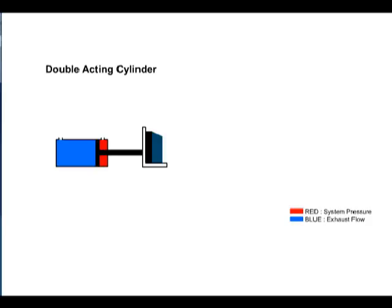Extension is slower than retraction because more fluid is required to fill the piston side of the cylinder. However, more force can be generated on extension because of greater effective area. On retraction, the same amount of pump flow will retract the cylinder faster because of the reduced volume caused by the rod. Less force, however, can be generated due to less effective area.